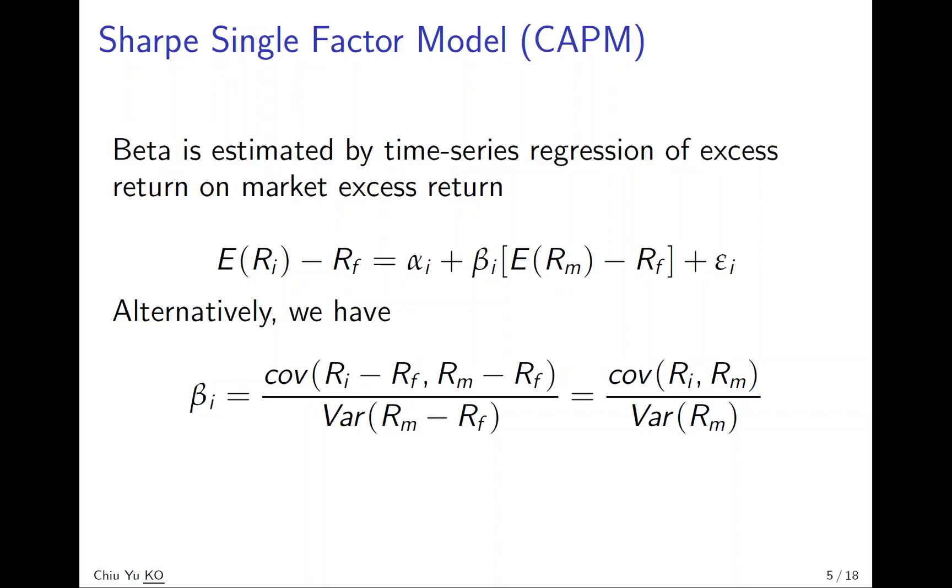Since risk-free return is not stochastic, we can have covariance of stock return over the market return as numerator, and denominator is variance of market return. So now we can estimate beta.